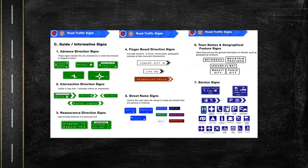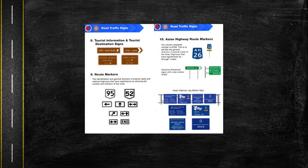Six is town names and geographical feature signs, which show what town you are in. Seven is service signs, usually seen in expressways to indicate nearby gasoline stations, hospitals, and restaurants. Eight is tourist information and tourist destination signs, which show tourist destinations that may be found in a certain area. Nine is route markers — identification and general direction of arterial roads and national highways, showing the number and direction of the route.